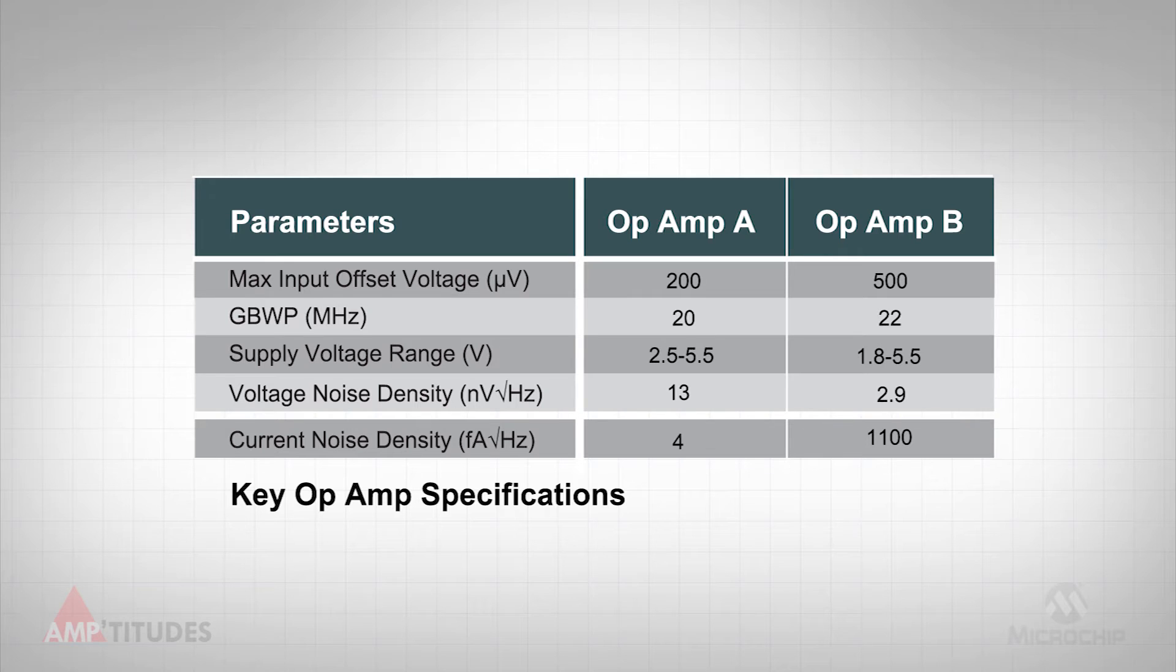Again, voltage noise is usually the first noise spec that comes to mind. Hence, op amp B appears to be the better choice in terms of noise performance. But is that true for all applications?